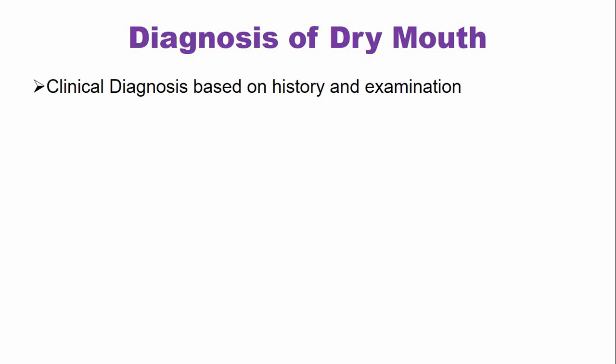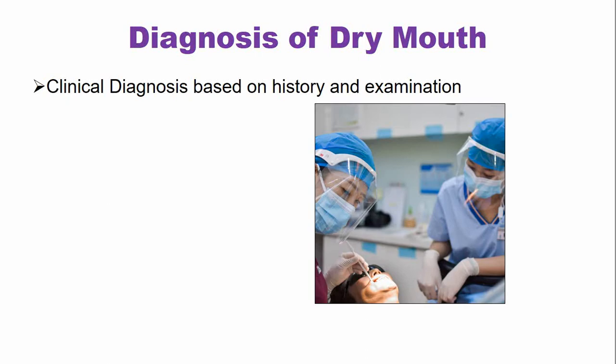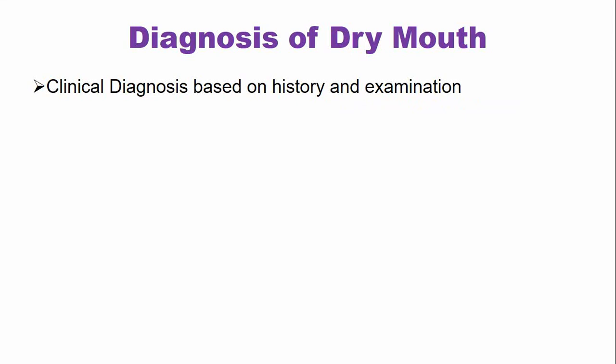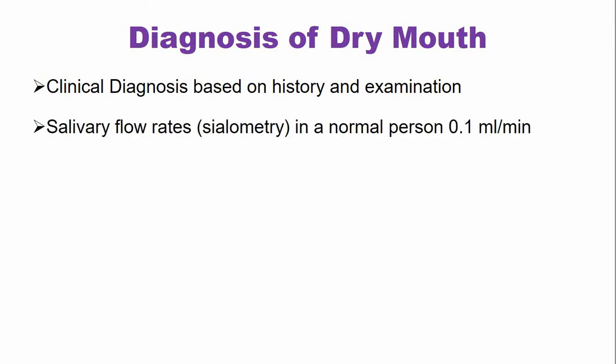How to diagnose dry mouth? The diagnosis is important, and most of the time it is based on history and examination of the patient. Sometimes other specialized investigations are required. One is salivary flow rate, also known as sialometry. In a normal person, the stimulated flow of saliva is 0.1 ml per minute. In sialometry, we ask the patient to spit into a small cylinder with measurements.